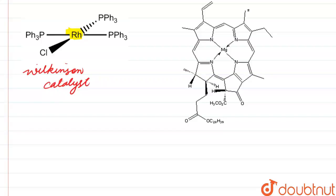This is the structure of chlorophyll which is found in the green leaves. This is chlorophyll and yes it does contain magnesium which is provided in the question.